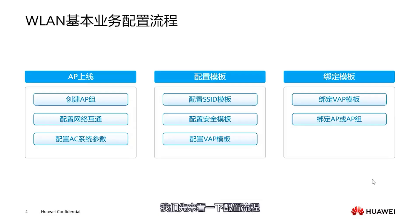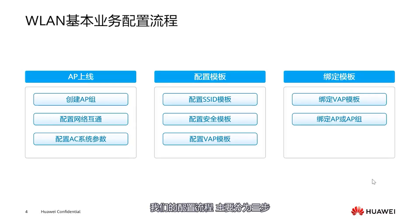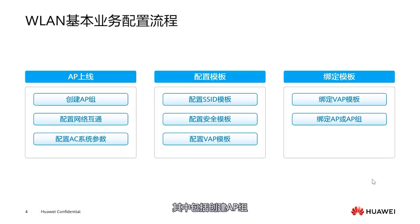Our configuration process mainly consists of three steps. The first step is AP going online. This includes creating an AP group, configuring network interconnectivity, and setting AC system parameters.